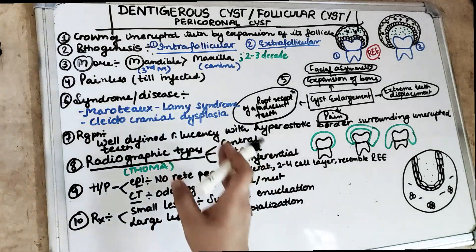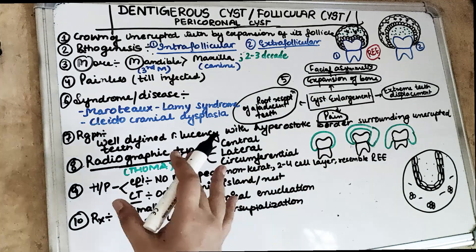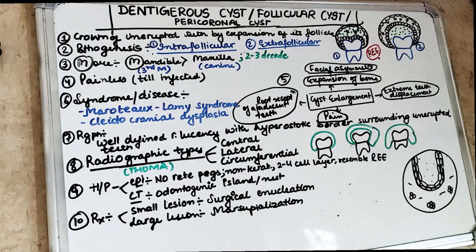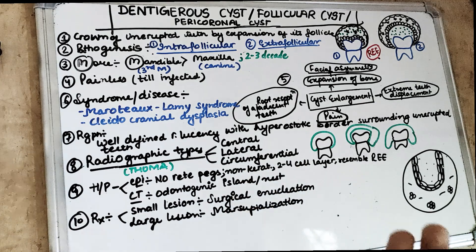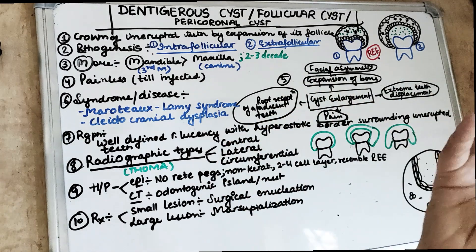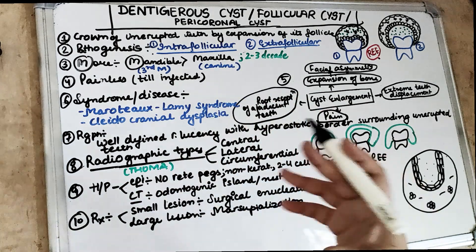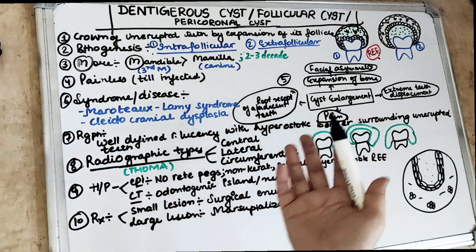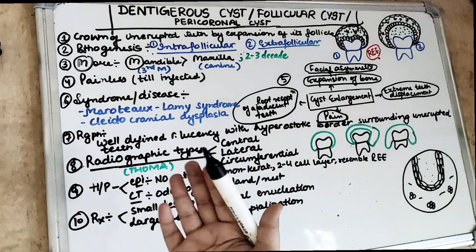Basically, there is an initiation — from reduced enamel epithelium most of the time. But for the Extrafollicular theory, it can be the cell rests of Serres. Then there is proliferation. For Intrafollicular, there is degeneration of the stellate reticulum. Then the cyst enlargement happens — the cyst keeps on growing due to osmolarity or due to bone resorption, as covered in the previous video.